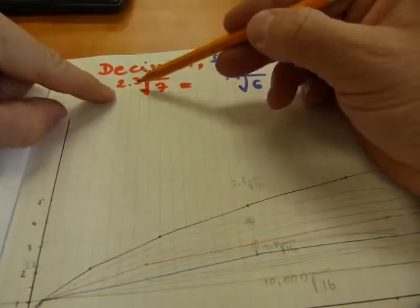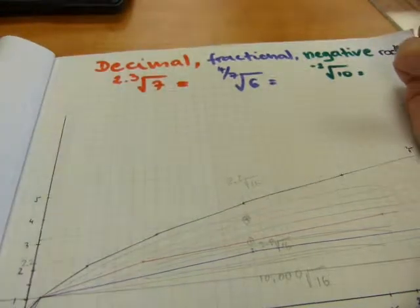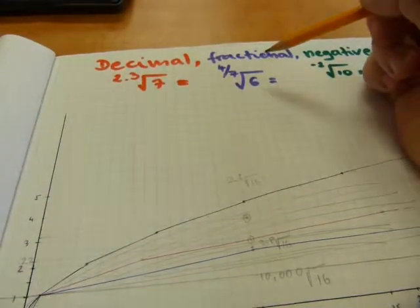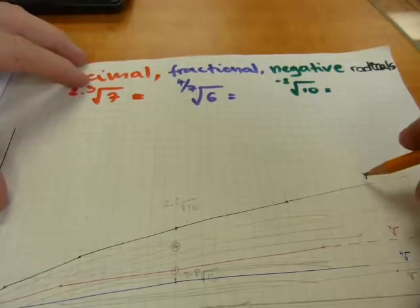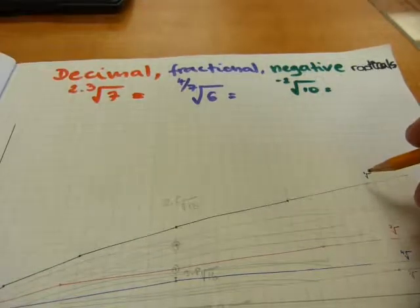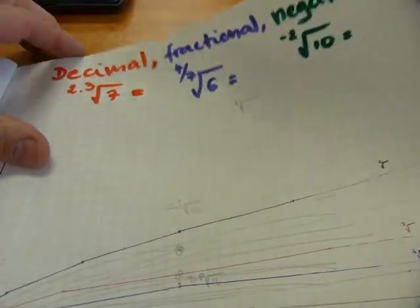And if it's true for decimals, the same is true for fractions. If this is the second root of things, there must be a first root somewhere, somewhere in the field in this direction.